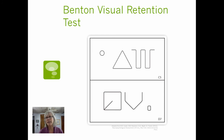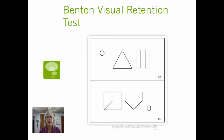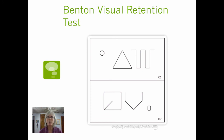This is the Benton Visual Retention Test, one neuropsychological measure. We're looking at whether this person is able to copy the stimulus, and whether this person is able to copy it from memory. The number of mistakes that the person makes says something about how this person is functioning intellectually.